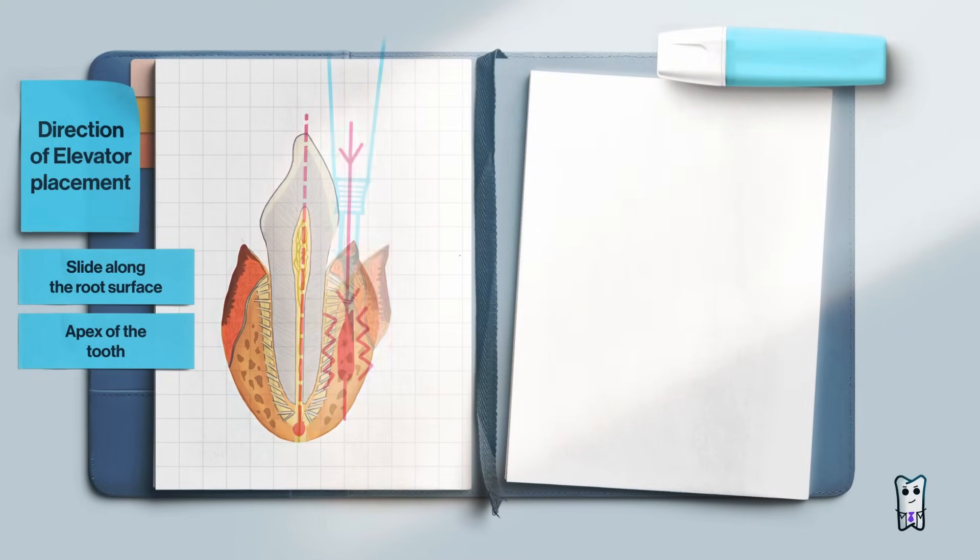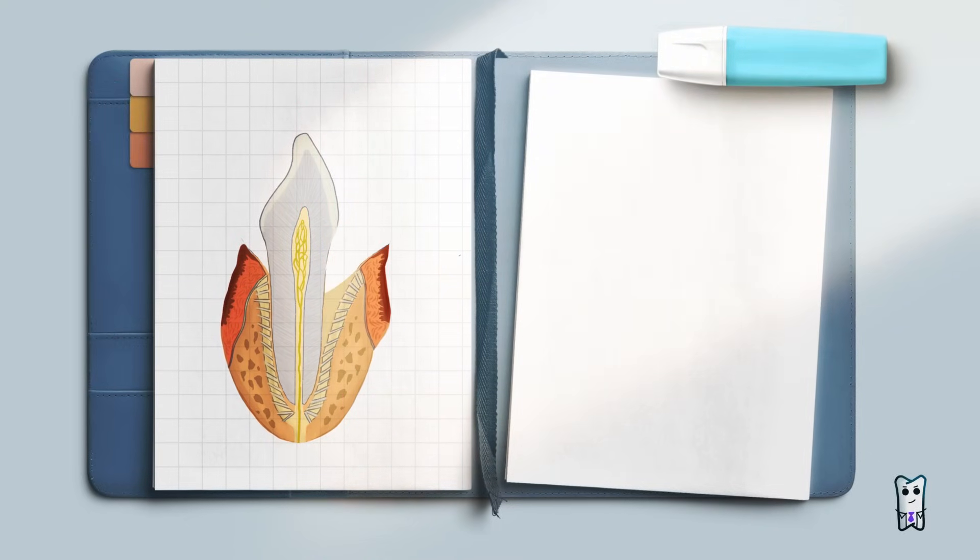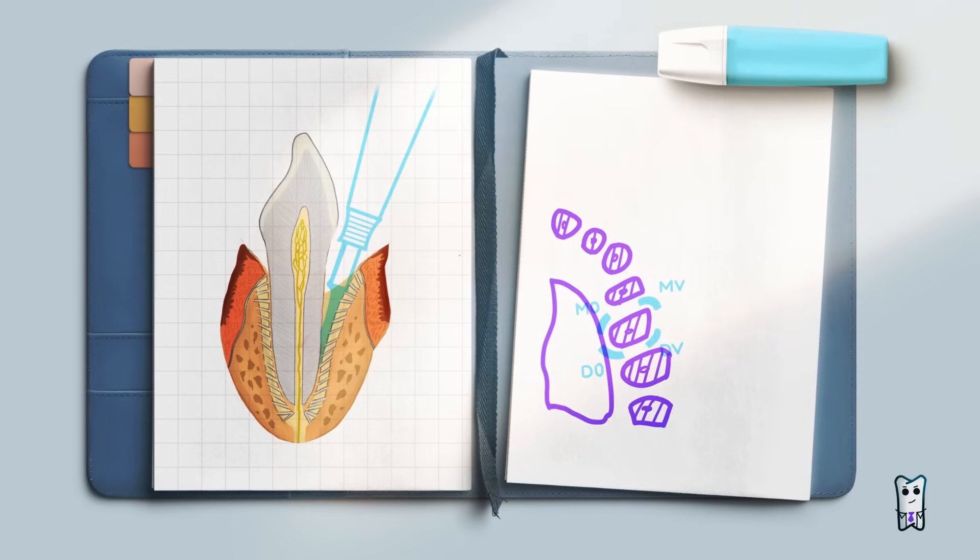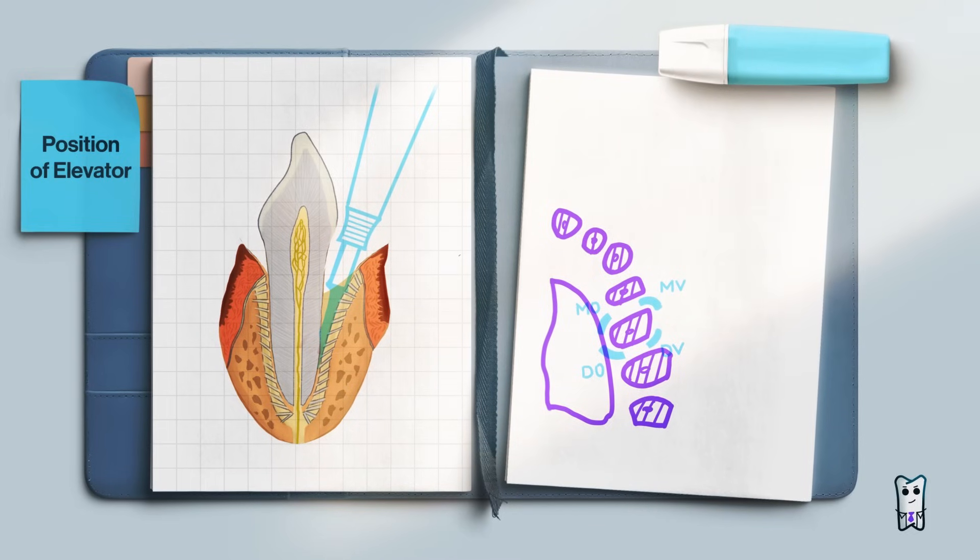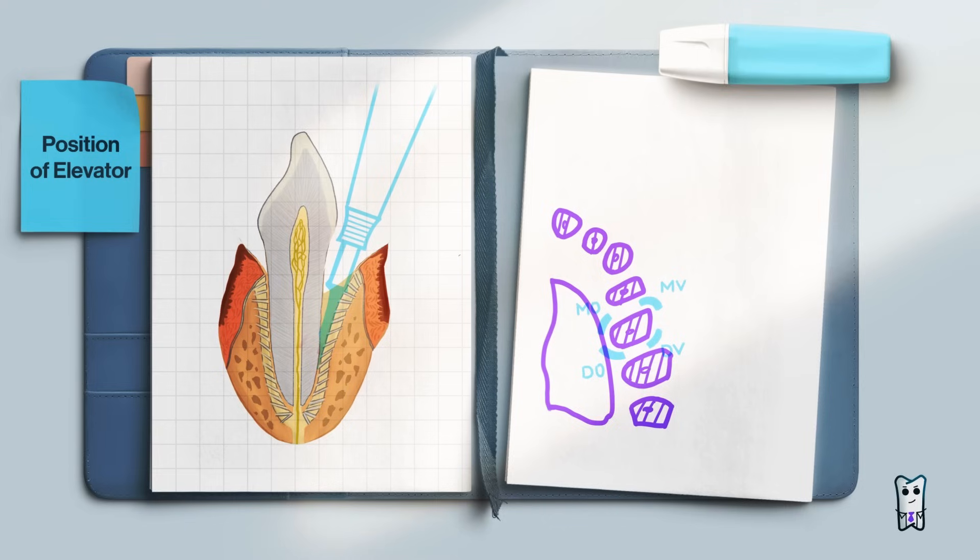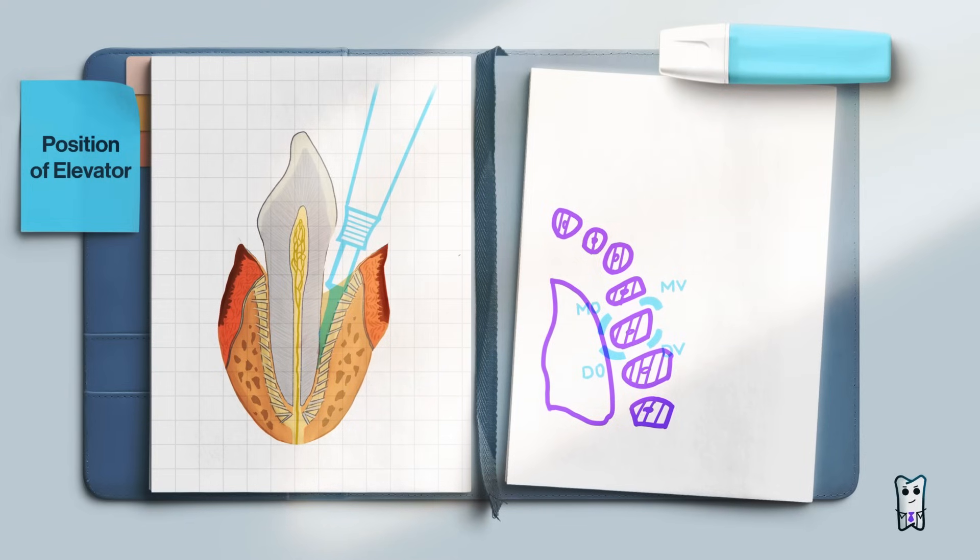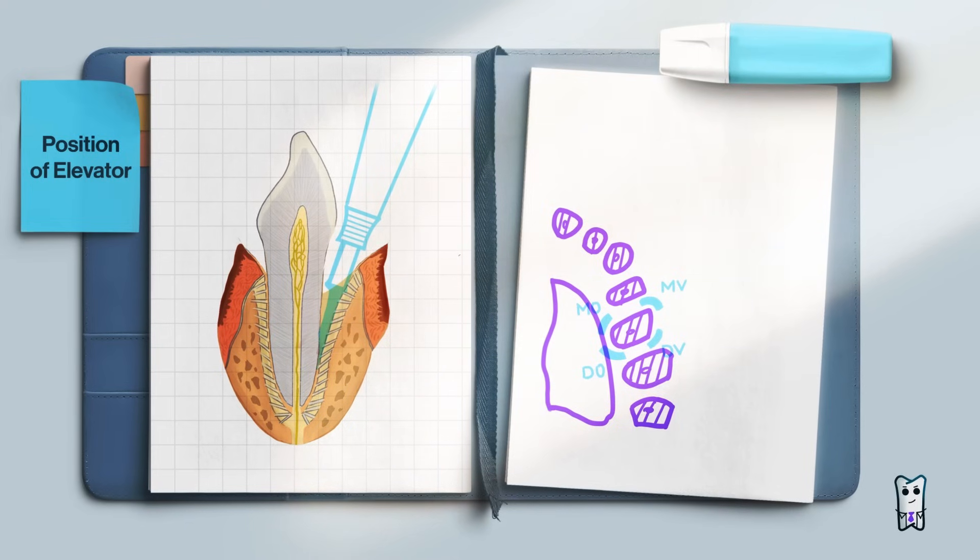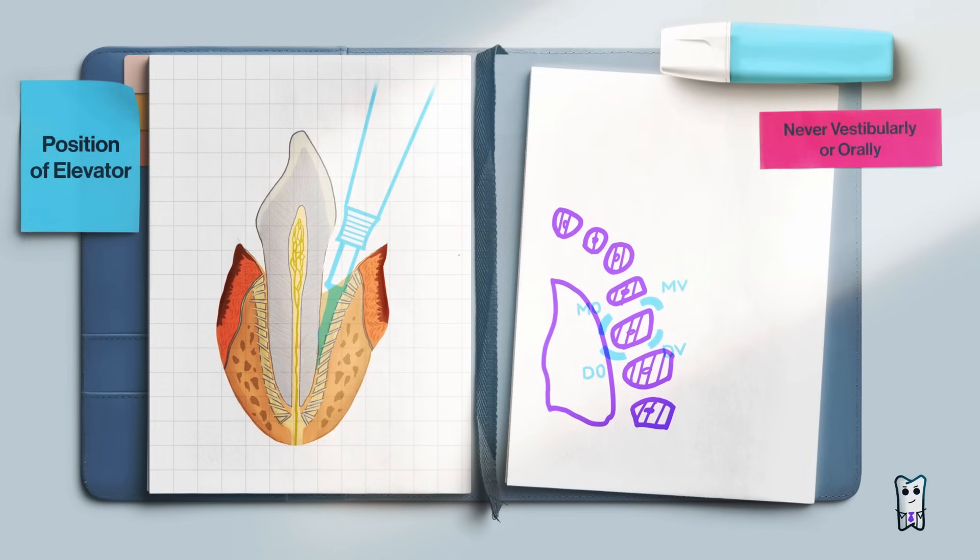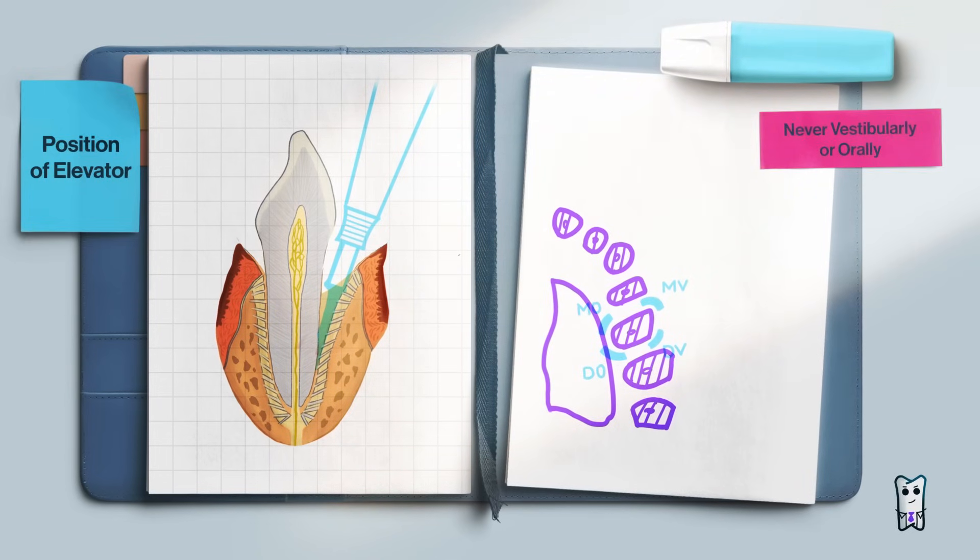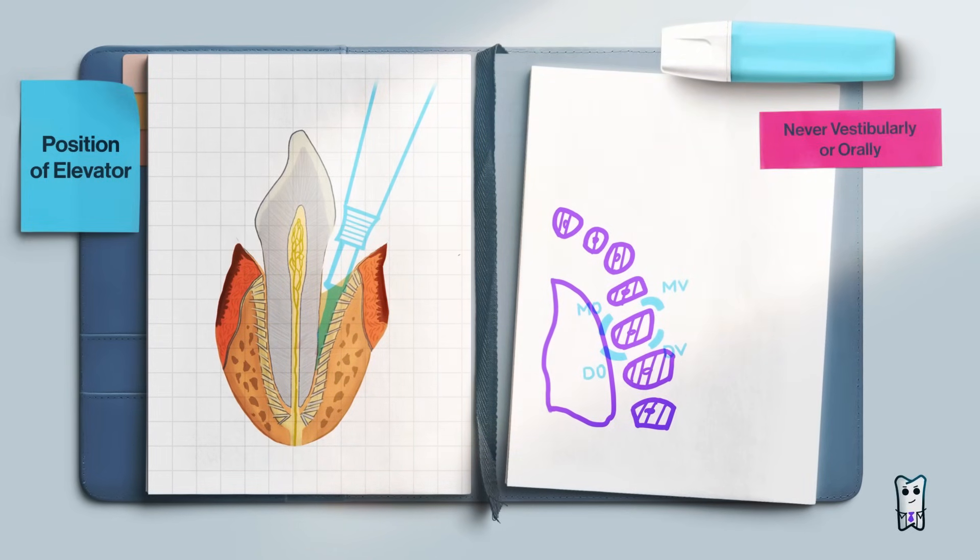Now as you know what the direction of the elevator should be, let's figure out where exactly around the tooth you should place it. The idea is that a stable crestal bone is needed to serve as fulcrum for the elevator. That's why I always tell my students never to approach the tooth exactly vestibularly or orally, because the bone there in most cases is thin and can be fractured easily.